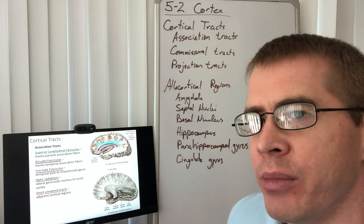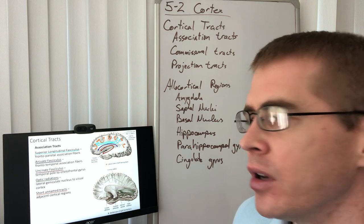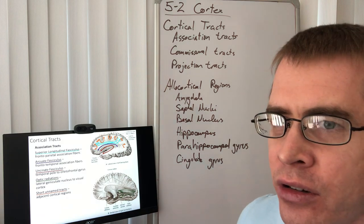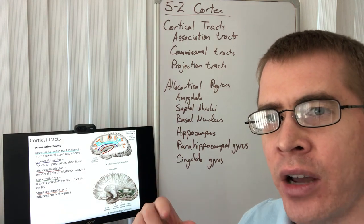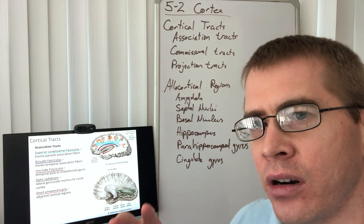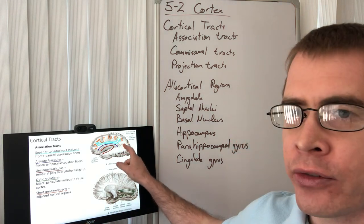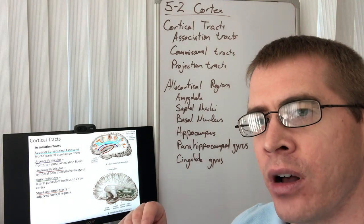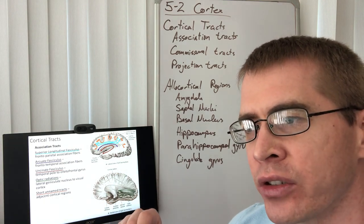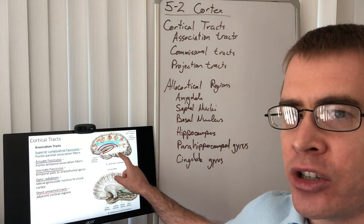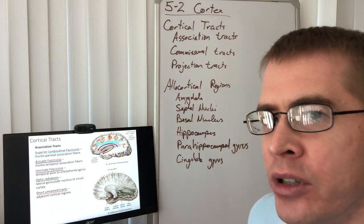Okay, the optic radiations can be considered a type of association tract, but in particular, the connecting tracts between the gyri within the cortices are definitely association tracts, and these are short, unnamed tracts. For instance, the connections from the primary visual cortex to the secondary visual cortex are going to be by the short, unnamed tracts between gyri.